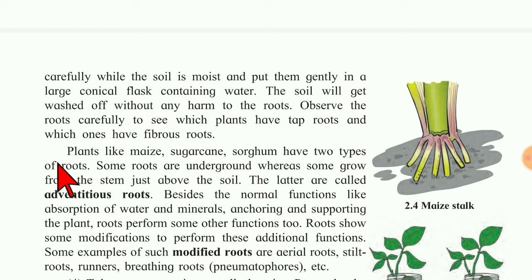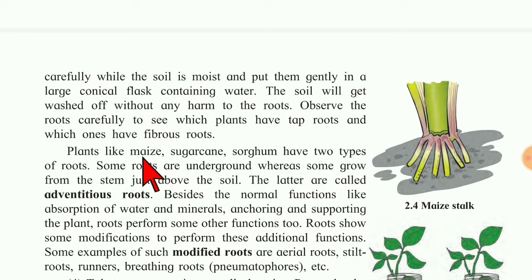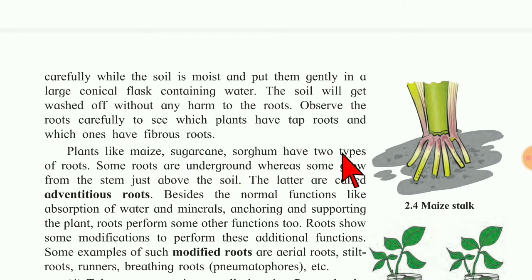Plants like maize, sugarcane, and sorghum have two types of roots. Corn, sugarcane (ganna), and sorghum (javar) — these plants have two types of roots. So which plants have two types of roots? That we will see.